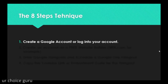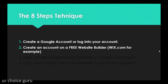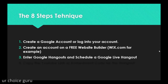First, you need to create a Google account or log into your existing one. If you already have a Google account, you also have a YouTube account, access to Google Drive, and everything else Google has available. Then you need to create an account on a free website builder — an example is Wix.com, and I will show you exactly in a future video how to use it. Then you need to enter your Google Hangouts account — just type 'Google Hangouts' on Google while logged in.